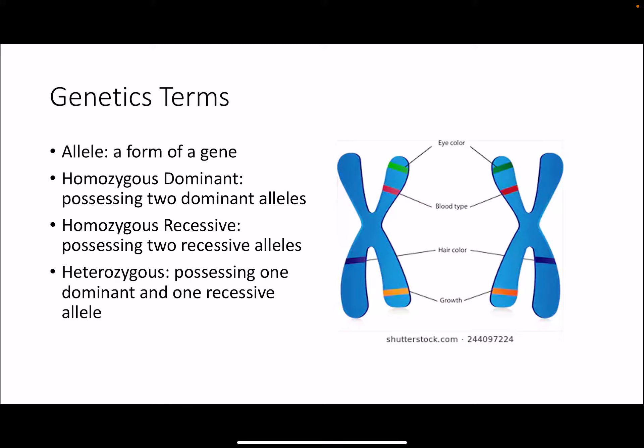In Mendelian genetics we refer to two alternative alleles as either a dominant allele or a recessive allele, meaning that the dominant form of the allele has dominant expression over the other allele. If an individual possesses a dominant allele, that trait is going to be present. A recessive allele is only expressed in an individual that possesses two recessive alleles. These combinations can be referred to as homozygous dominant — two dominant alleles — homozygous recessive — two recessive alleles — or heterozygous, which is one dominant and one recessive allele.